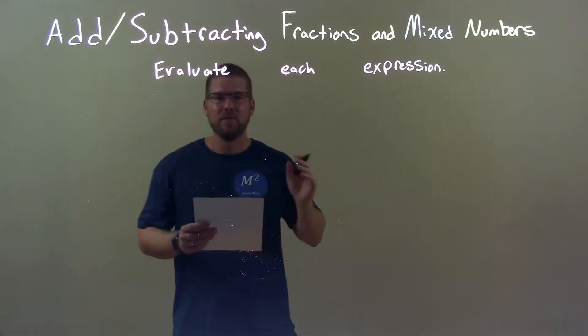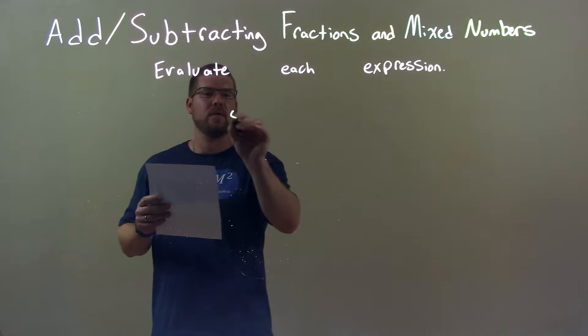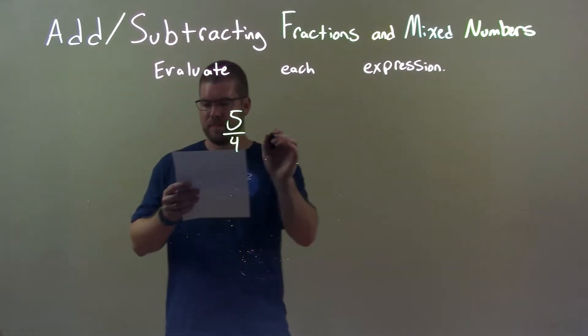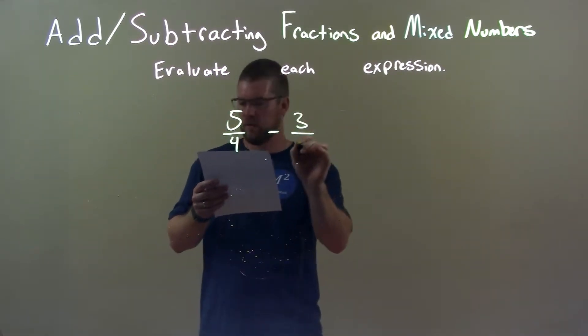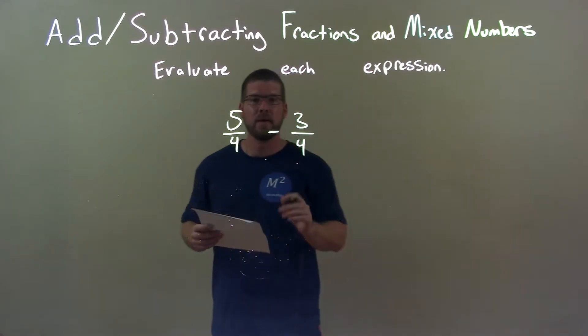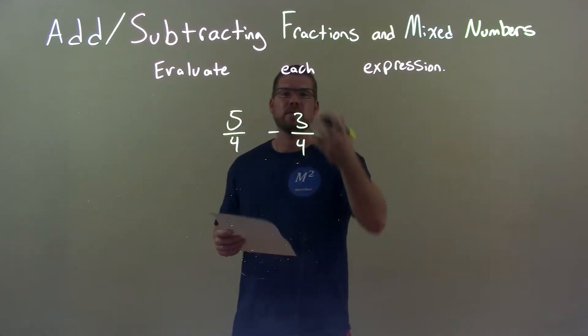So, if I was given these fractions, 5 over 4 minus 3 over 4. So we have 5 over 4 minus 3 over 4.